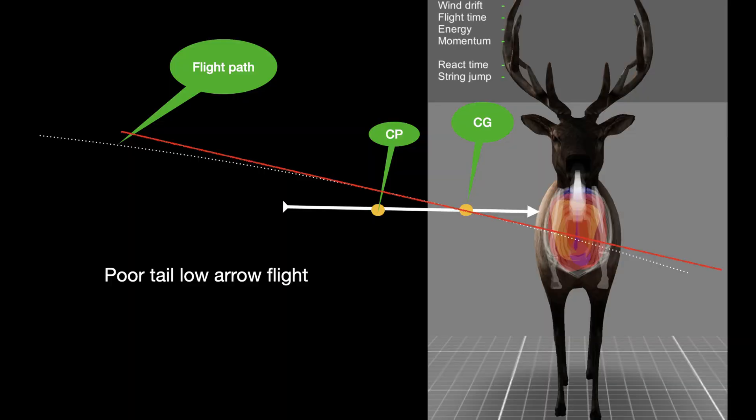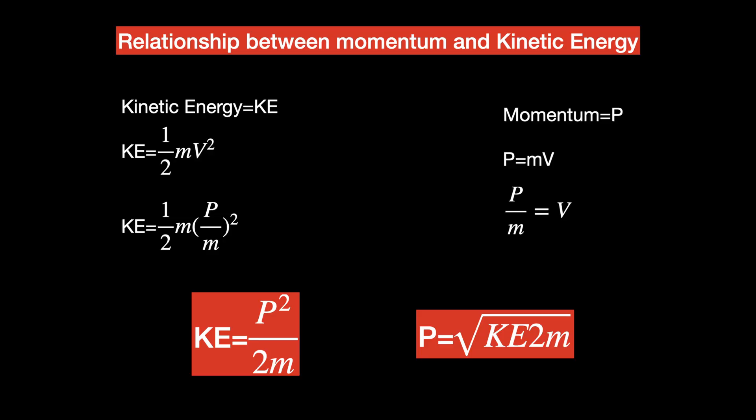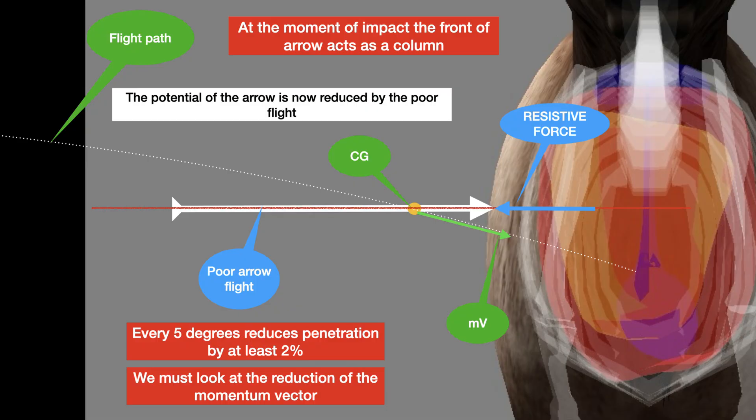This is where momentum comes into play. Momentum is a vector, and when the shaft is off-axis relative to the flight path the arrow is taking, you're going to get only a percentage of the energy available to penetrate. MV is your momentum vector, and the resistive force is at an angle to that. The arrow still wants to follow the flight path based on center of gravity, but as soon as it hits the animal, the broadhead takes over direction — and you lose all energy not directed along that axis.